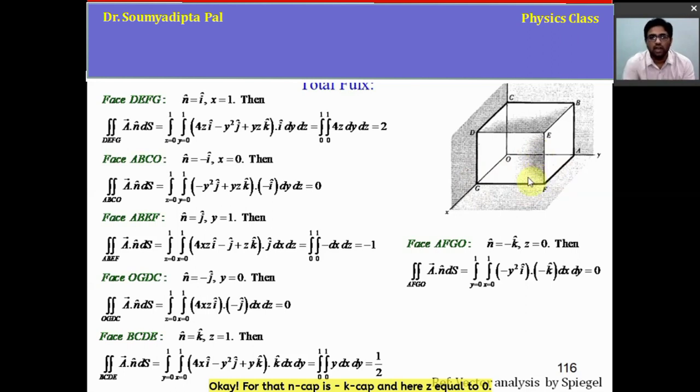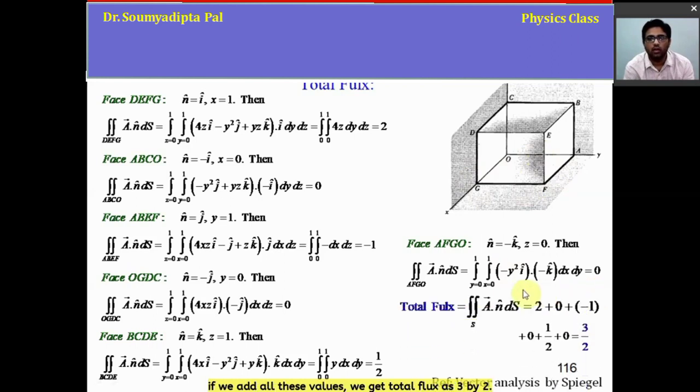for that, n cap is minus k cap and here z equal to 0. See, this is the z equal to 0 plane, AFGO surface. Then the integration value will be 0. Now if we add all these values, we get total flux as 3 by 2.